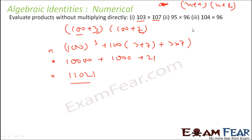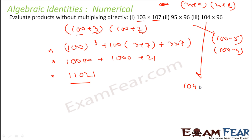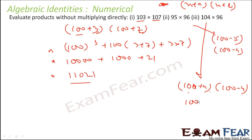Similarly you can do 95 × 96, which is (100 − 5)(100 − 4) — it is always good to use hundreds or tens because it is easy to multiply. For 104 × 96, write as (100 + 4)(100 − 4). This uses the identity (a + b)(a − b) = a² − b², giving 100² − 4² = 10000 − 16 = 9984.